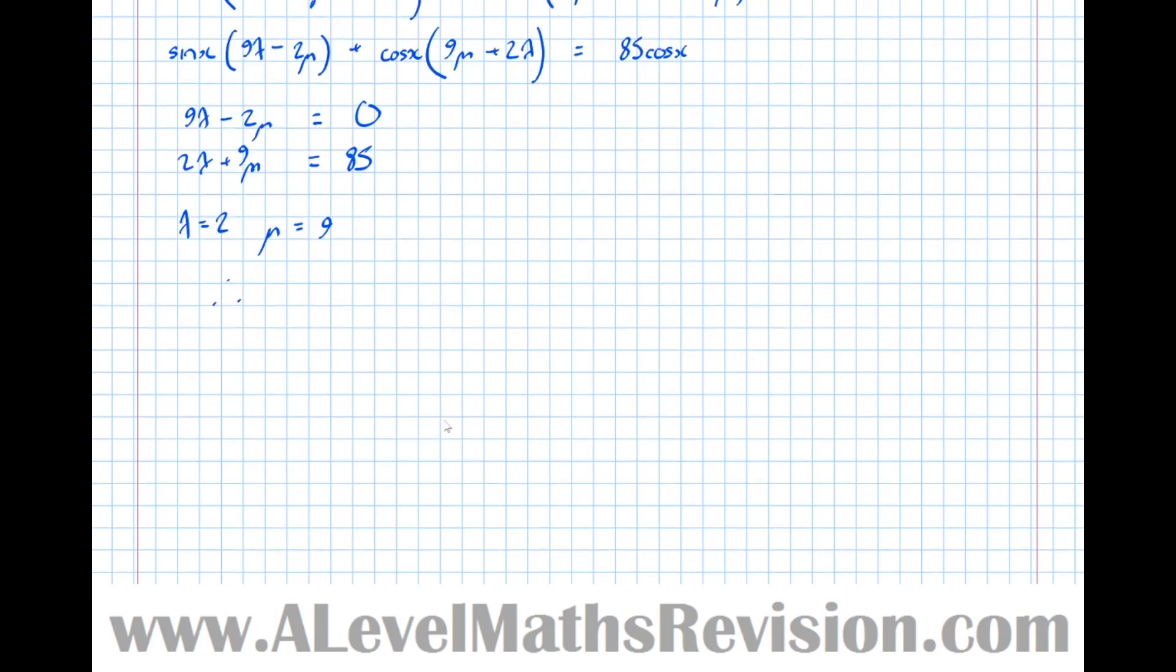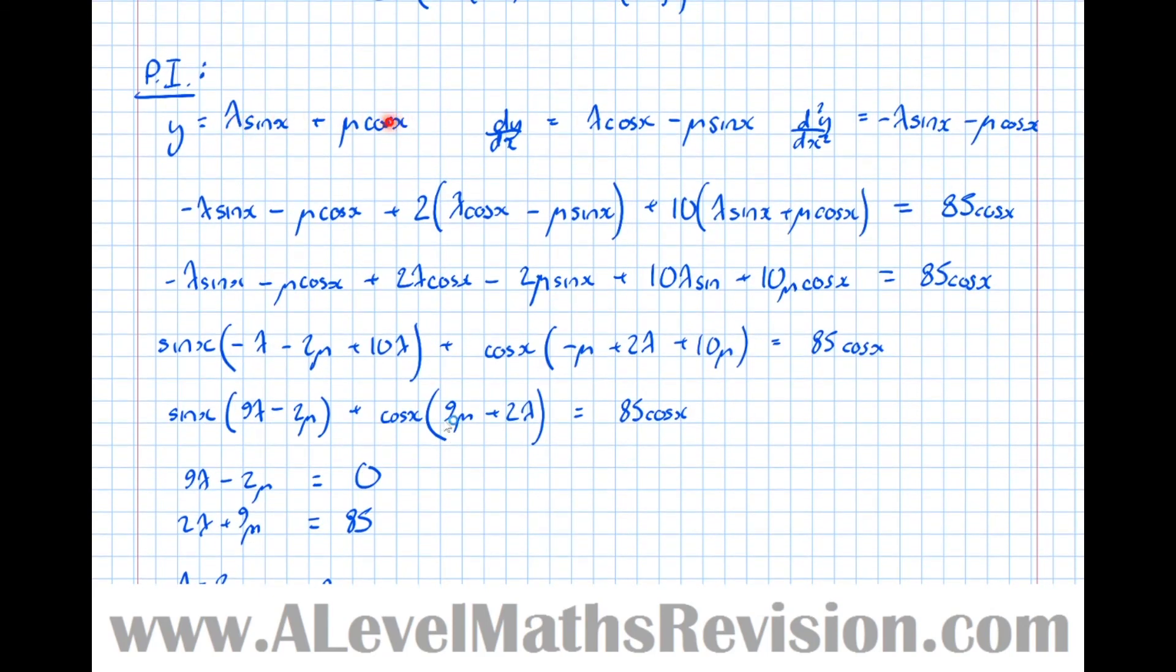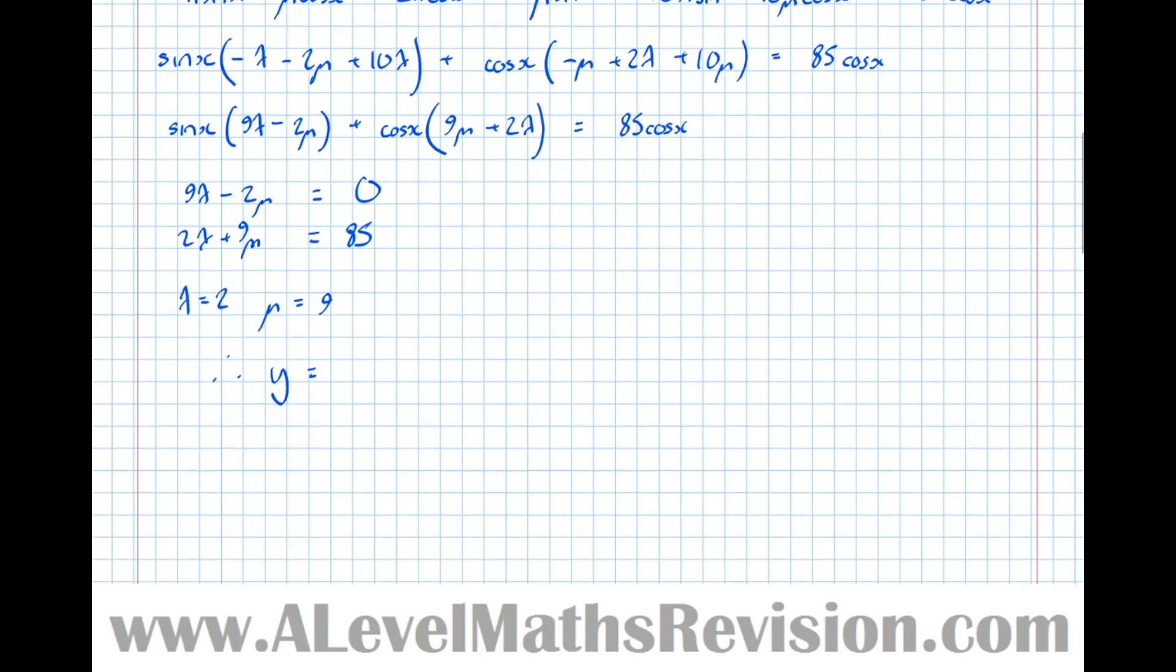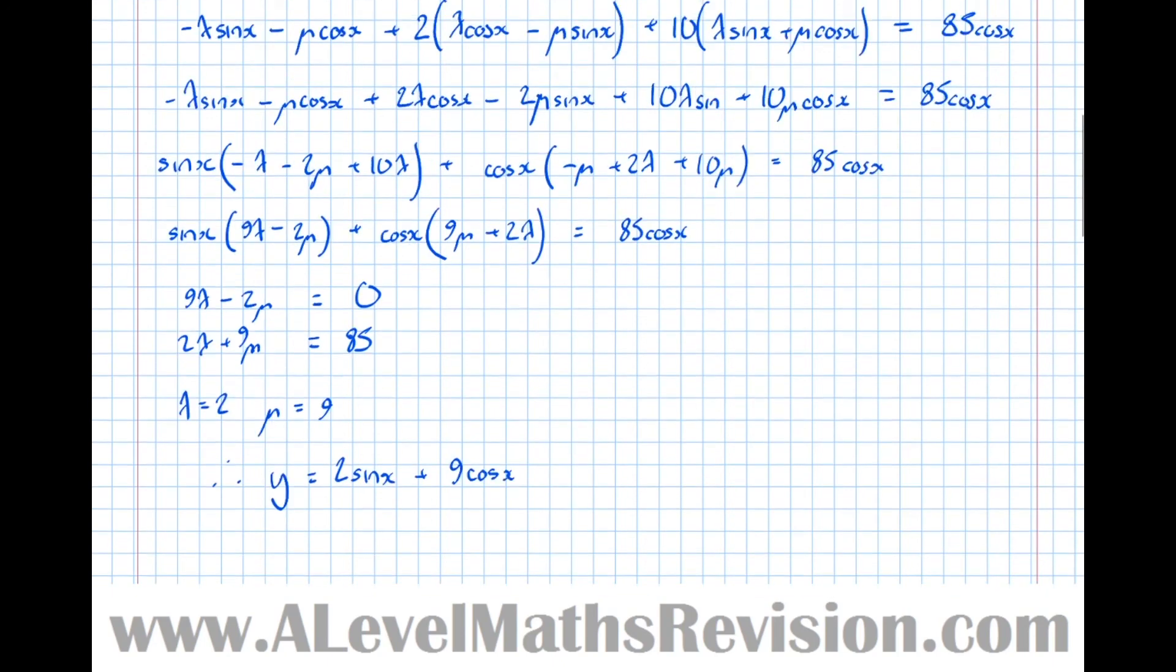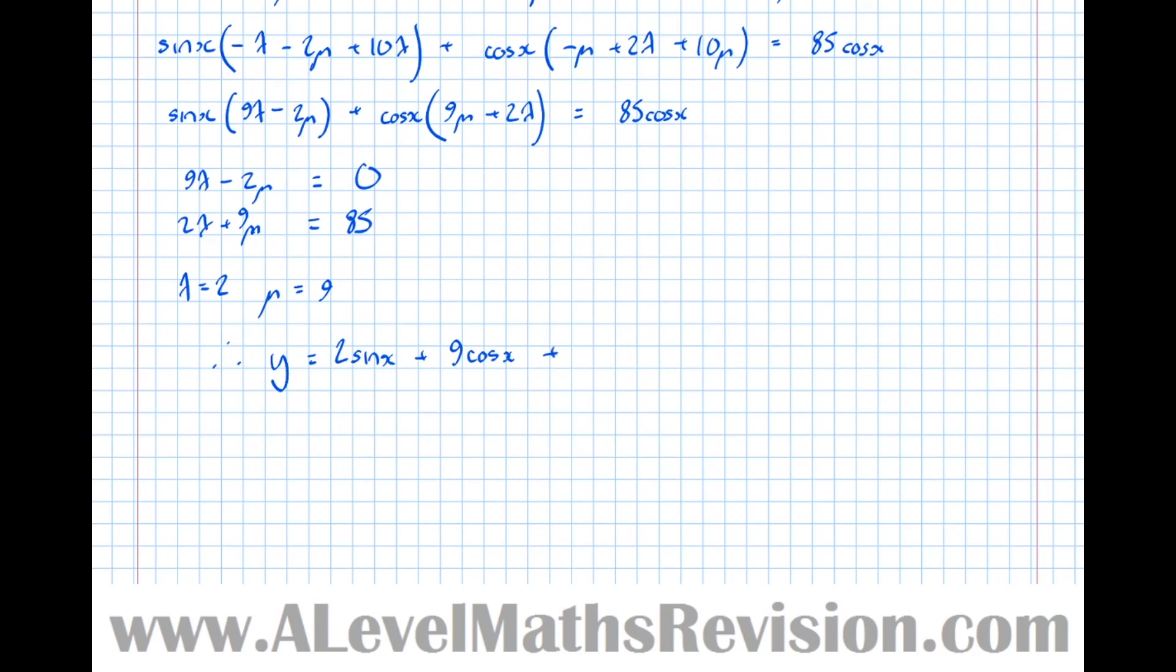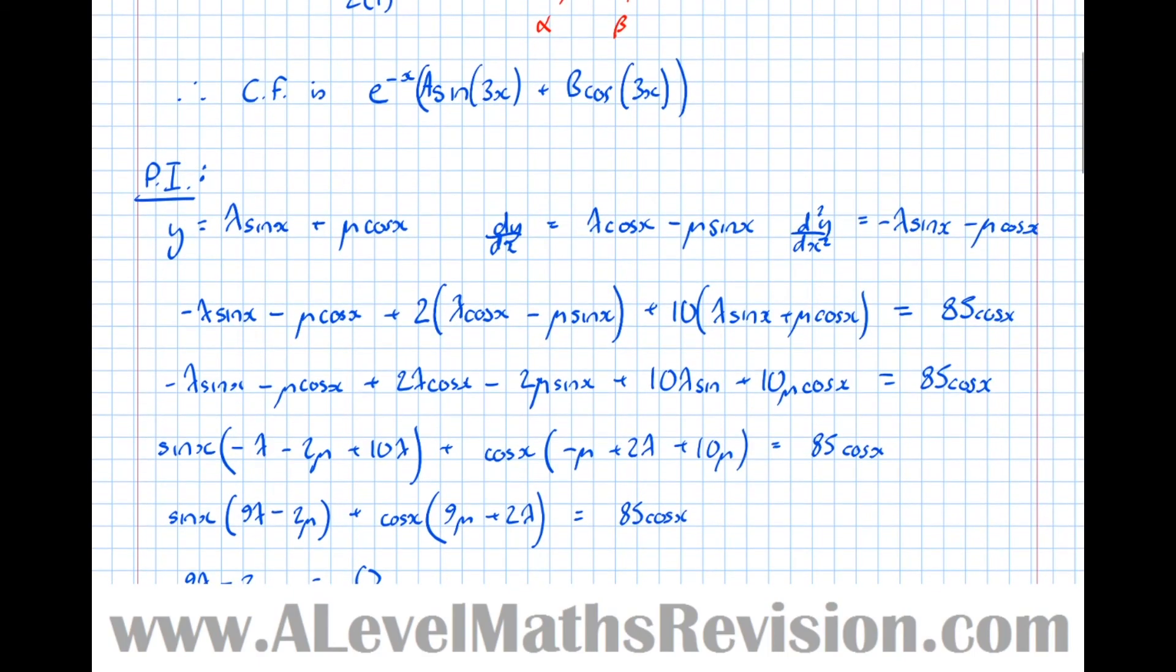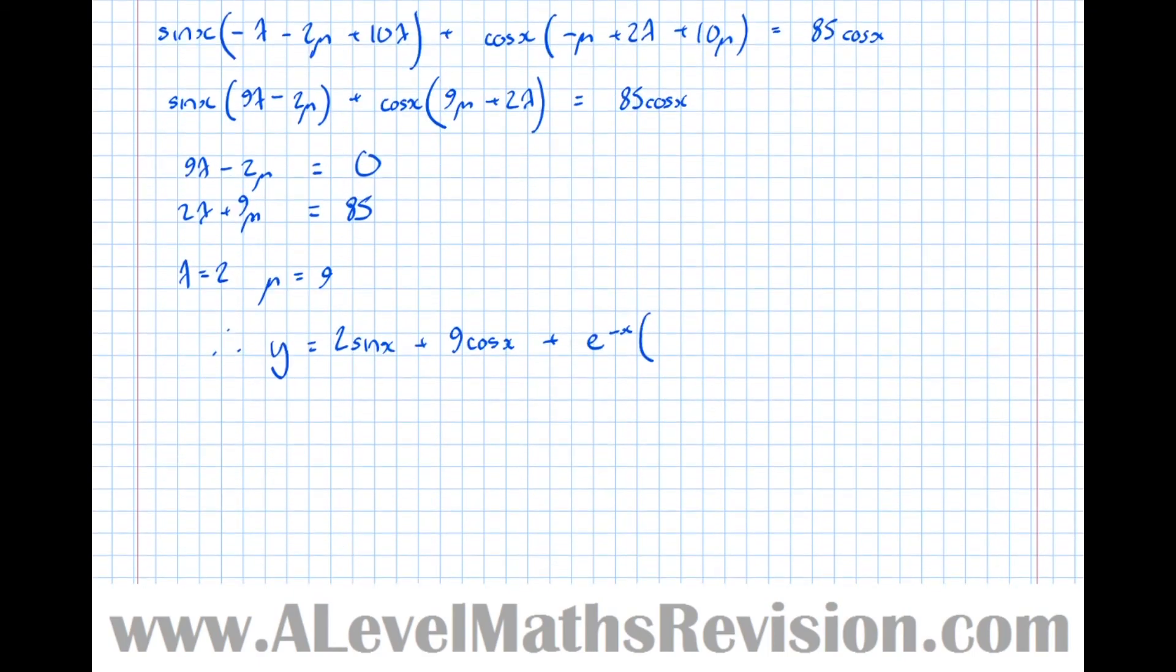Therefore, the final answer is y equals, and this was our particular integral, lambda sin x plus mu cos x. So 2 sin x plus 9 cos x. And then plus our complementary function, which was e to the minus x times a sin 3x plus b cos 3x.